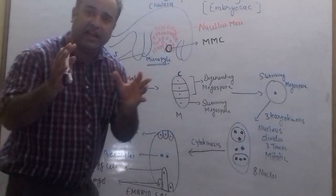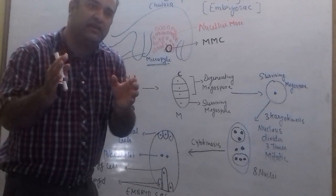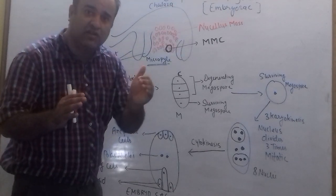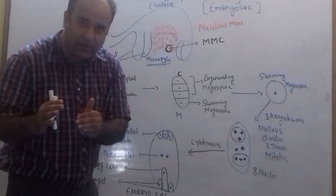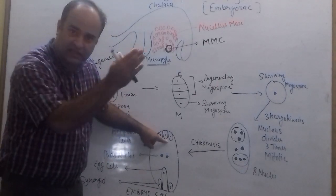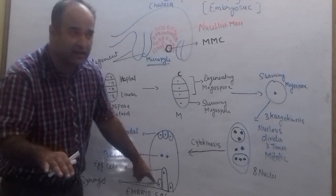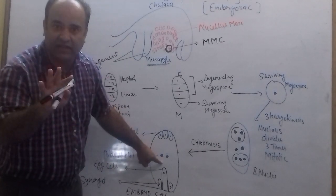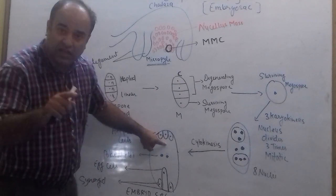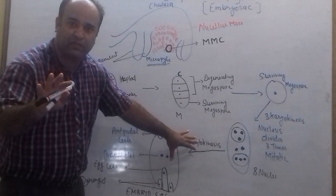These eight nuclei will arrange themselves such that three will go towards the chalazal end, three will go towards the micropylar end, and two will come to the center.